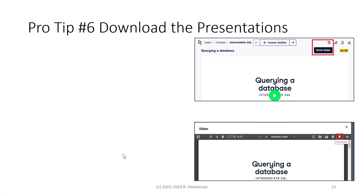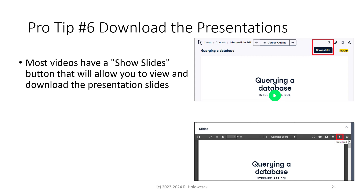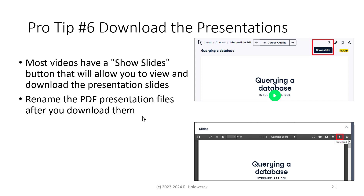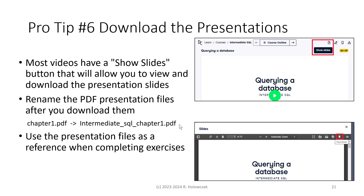Pro tip number six: download the presentations. Most videos have a Show Slides button that will allow you to view and download the presentation slides. For example, while watching a video called Querying a Database, there's a Show Slides button in the upper right-hand corner. After you click on that, a new window will open with the PDF file displayed, and you can then click the download button. Rename the PDF presentation files after you download them — for example, rename chapter1.pdf to intermediate SQL chapter1.pdf to keep it distinct from other courses. You can use the presentation files as a reference when completing your exercises, since they often mention functions or features of the programming language.